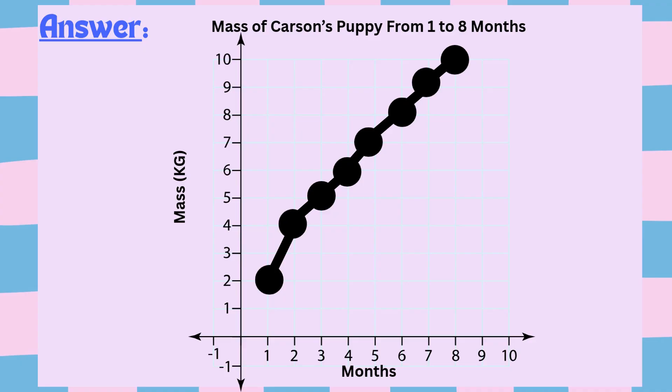We use a line graph here because this is continuous data. The puppy's weight changes continuously over time, not just at the moments it was measured. The line helps us visualize the growth trend.